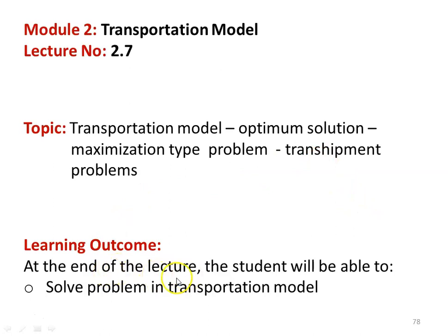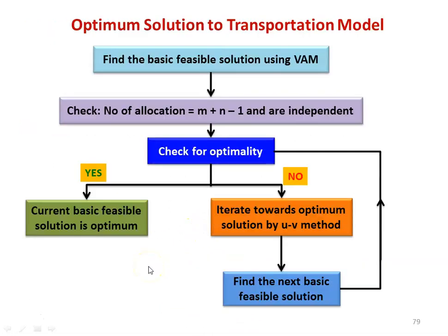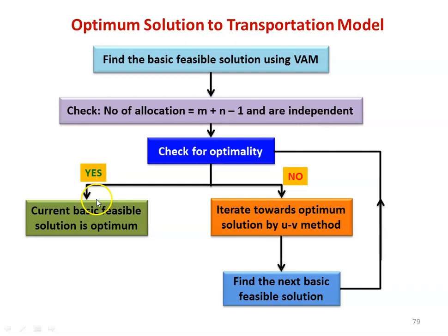The learning outcome: at the end of the lecture, the student will be able to solve problems in the transportation model. We recall the optimum solution procedure: first, find the basic feasible solution using the Vogel's approximation method. Then check that the number of allocations equals m plus n minus 1 and that they are independent — meaning the allocations should not form a closed loop. Then check for optimality. If satisfied, the solution is optimum; if not, use the UV method to iterate the next solution and continue until the optimal solution is obtained.